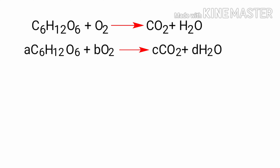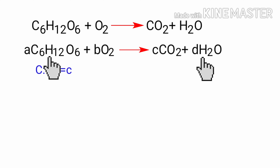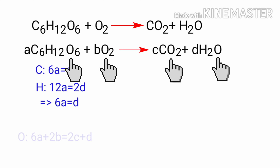For Carbon: 6A = C. For Hydrogen: 12A = 2D, which simplifies to 6A = D. For Oxygen: 6A + 2B = 2C + D.